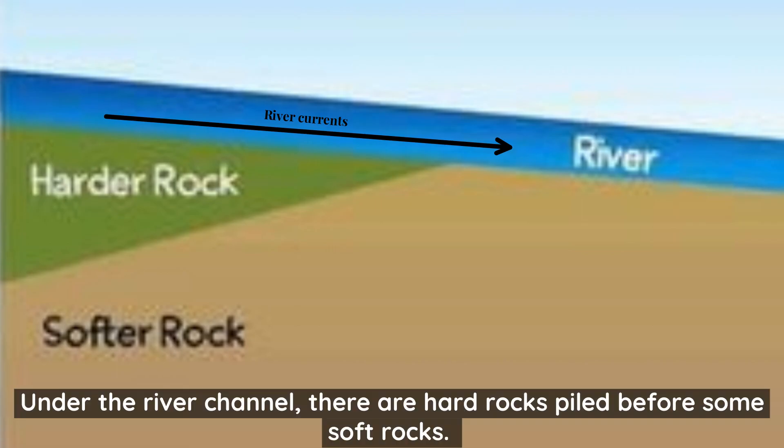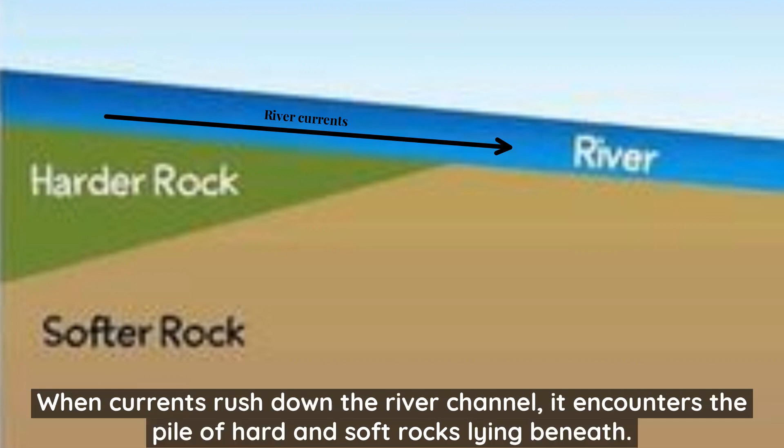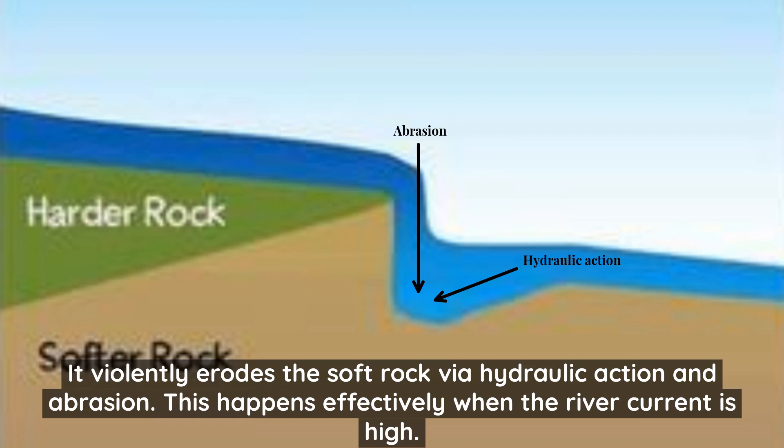Under the river channel, there are hard rocks piled before some soft rocks. When currents brush down the river channel, it encounters the pile of hard and soft rocks lying in it. It violently erodes the soft rock via hydraulic action and abrasion. This happens most effectively when the river current is high.